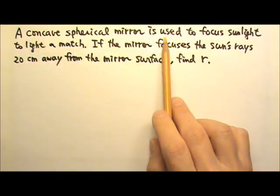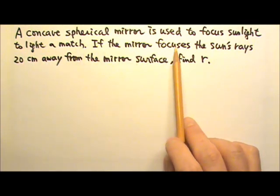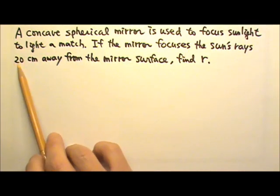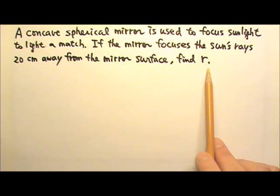A concave spherical mirror is used to focus sunlight to light a match. If the mirror focuses the sun's rays 20 cm away from the mirror's surface, what is the radius of this spherical mirror?